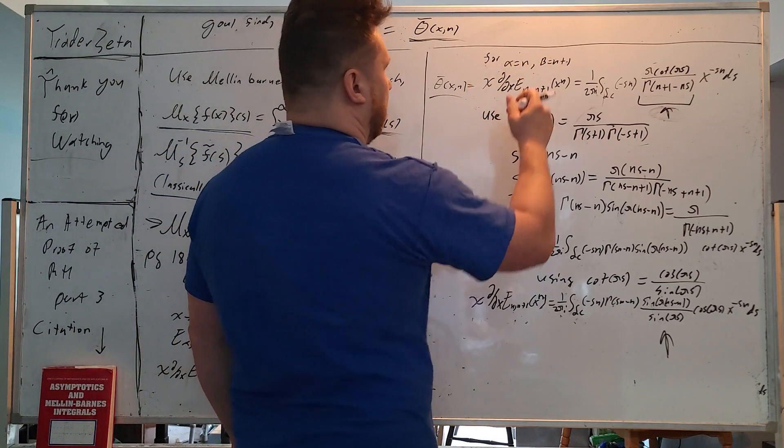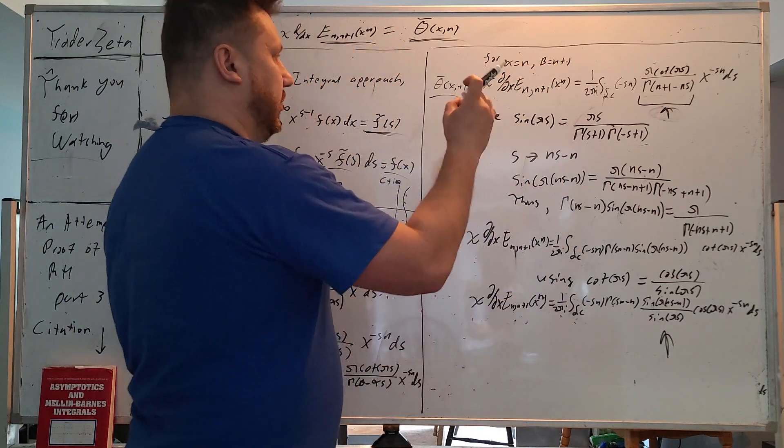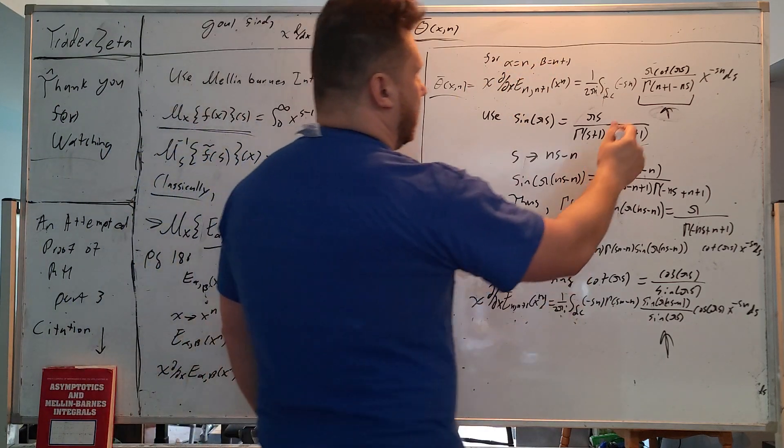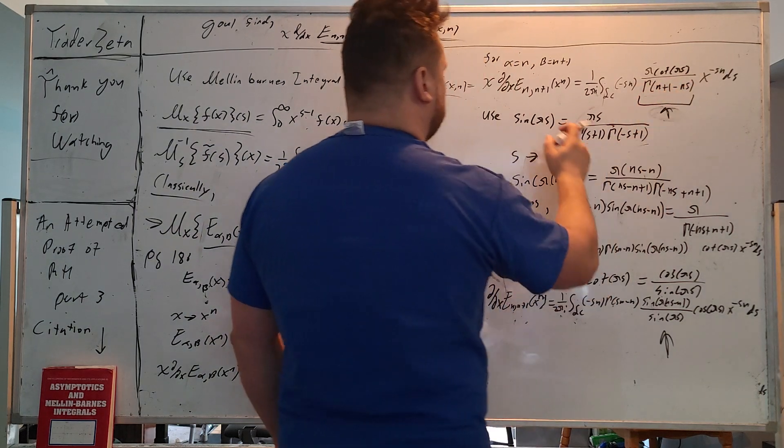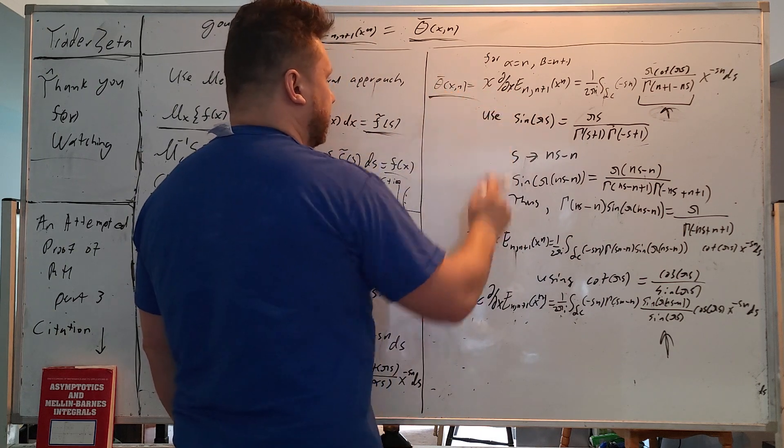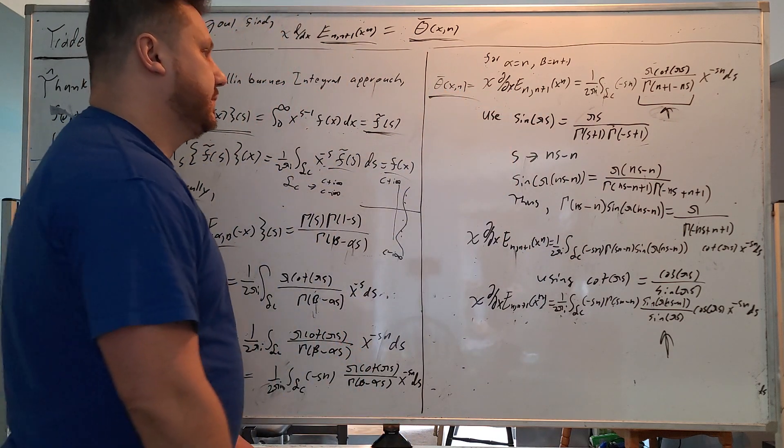For alpha equals n and beta equals n plus 1, we're going to plug things in. So you have now gamma n plus 1 minus ns, and now we have theta bar xn.